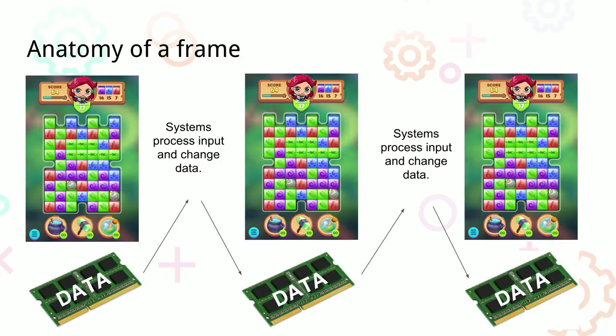One way to think of a game is we want to get 60 frames a second. We have some data — the game is in some kind of state: lives, time on a clock, the color of each pixel. We have a snapshot and display it to the player, then take input, process it, and hopefully 16 milliseconds later we have another snapshot. Systems act on the data — we're displaying data visually and then acting on it.